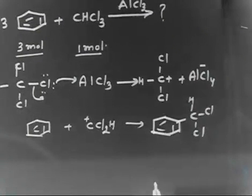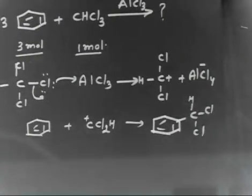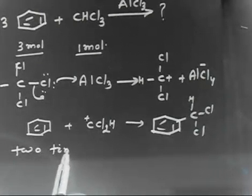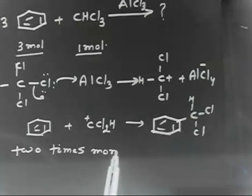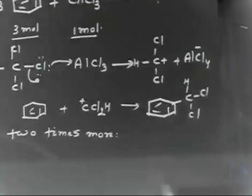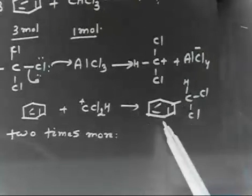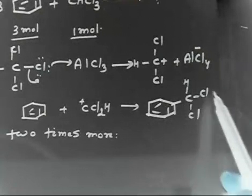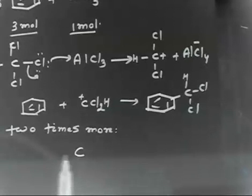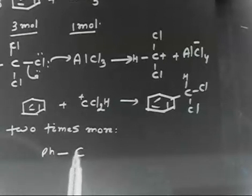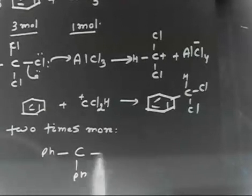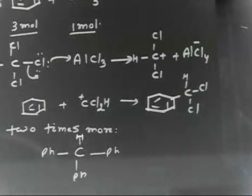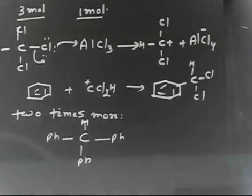If you do the same thing 3 times — we have done it once, so 2 more times with the same kind of reaction — what will happen? You have basically removed one Cl and added one phenyl group each time. If you remove the remaining chlorines and keep adding phenyl groups, you will have one phenyl here, one phenyl here, and one H here. So this is the final product.